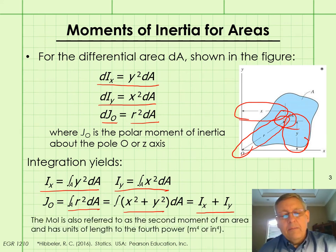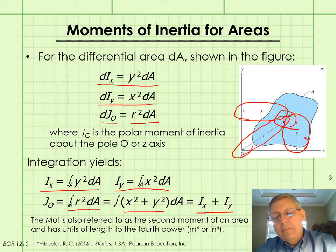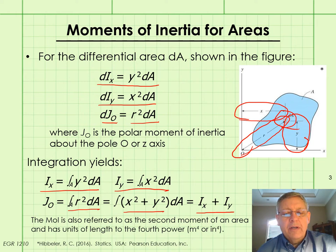The moment of inertia is also referred to as the second moment of an area. Notice that its units are length to the fourth power. So if we're working in meters, the moment of inertia of an area would have units of meters to the fourth power; if working in inches, it would be inches to the fourth power, and so on.